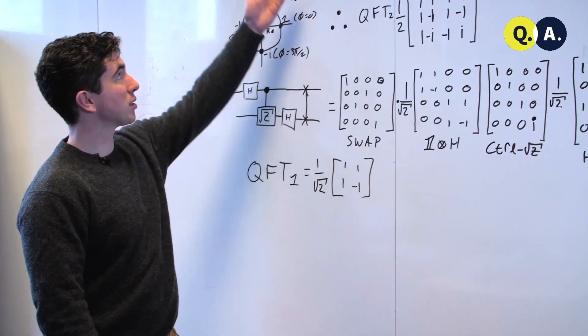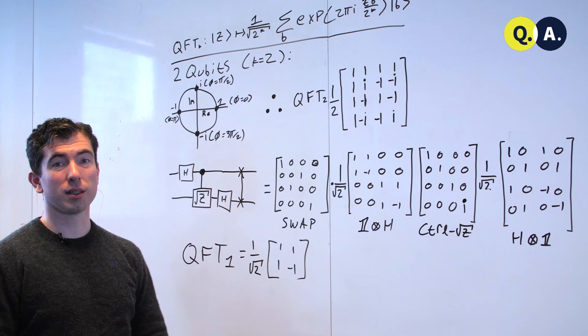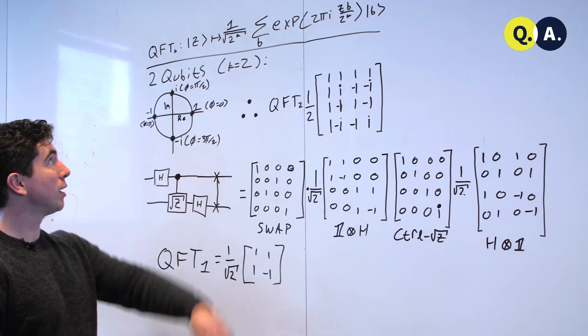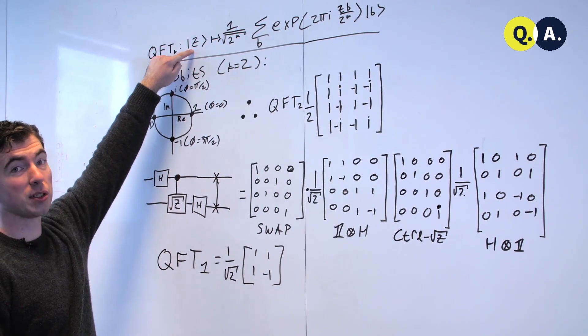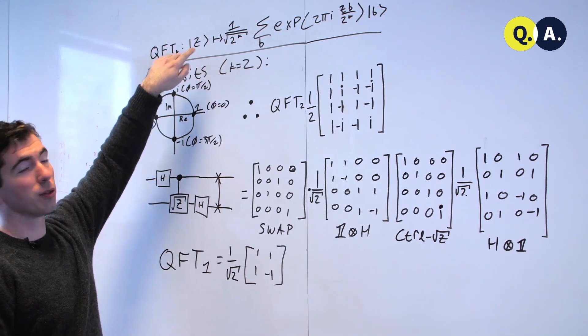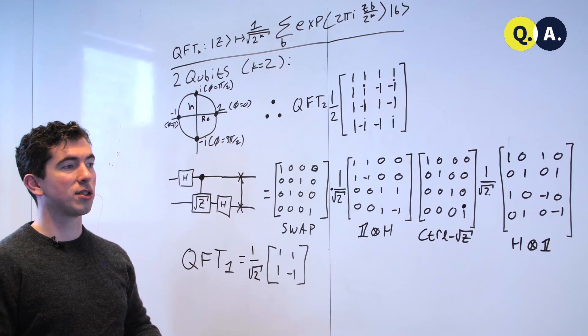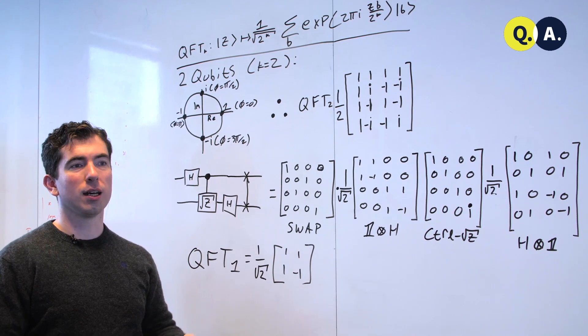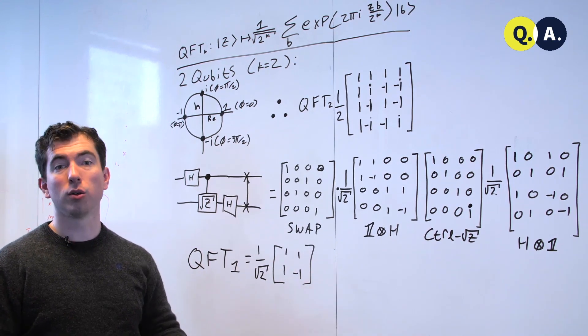Let's begin with this mathematical formula which tells us what the quantum Fourier transform on k qubits is doing. It's taking a state that represents an integer z. For instance, on three qubits, the state 7 would be 111, the state 2 would be 010, etc.